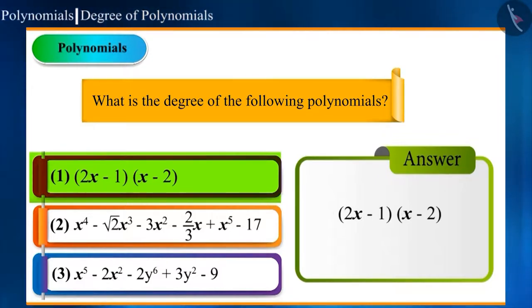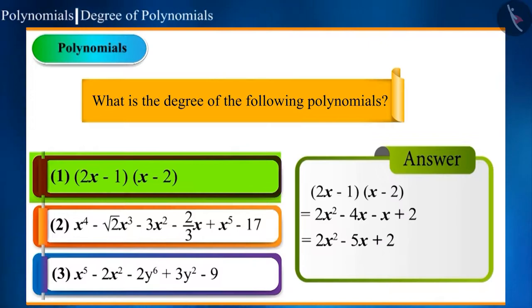On solving (2x - 1)(x - 2), we get 2x² - 4x - x + 2, which in turn is equal to 2x² - 5x + 2. Now, we can say that this is a quadratic polynomial.